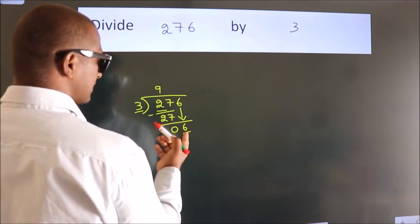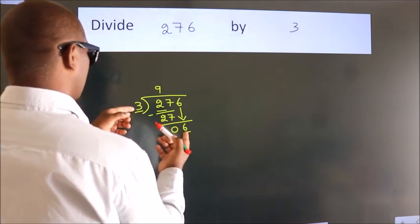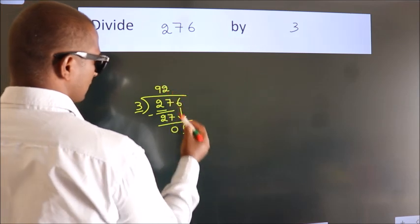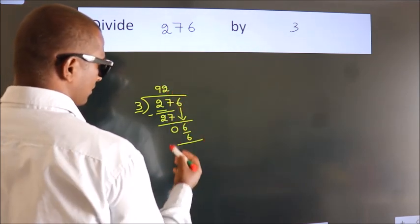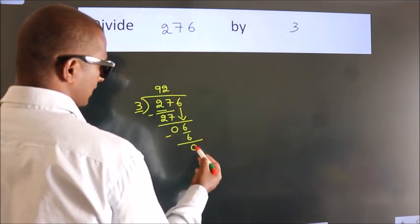When do we get 6? In the 3 table. 3 times 2 is 6. Now we subtract. We get 0.